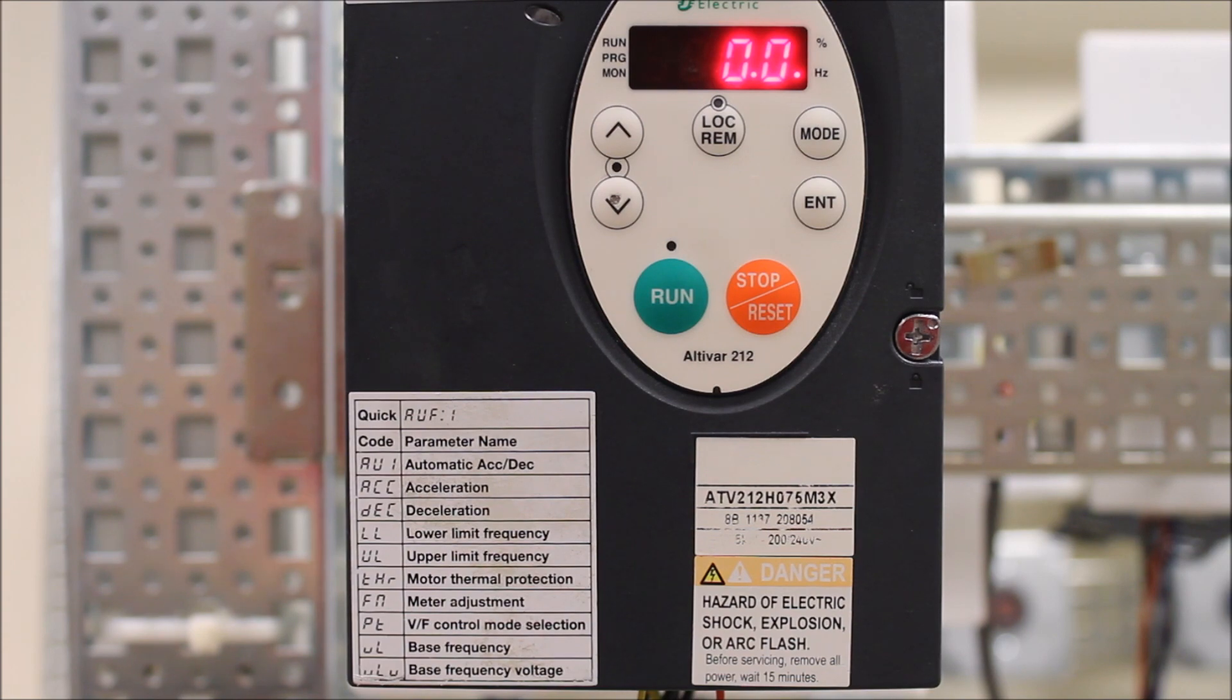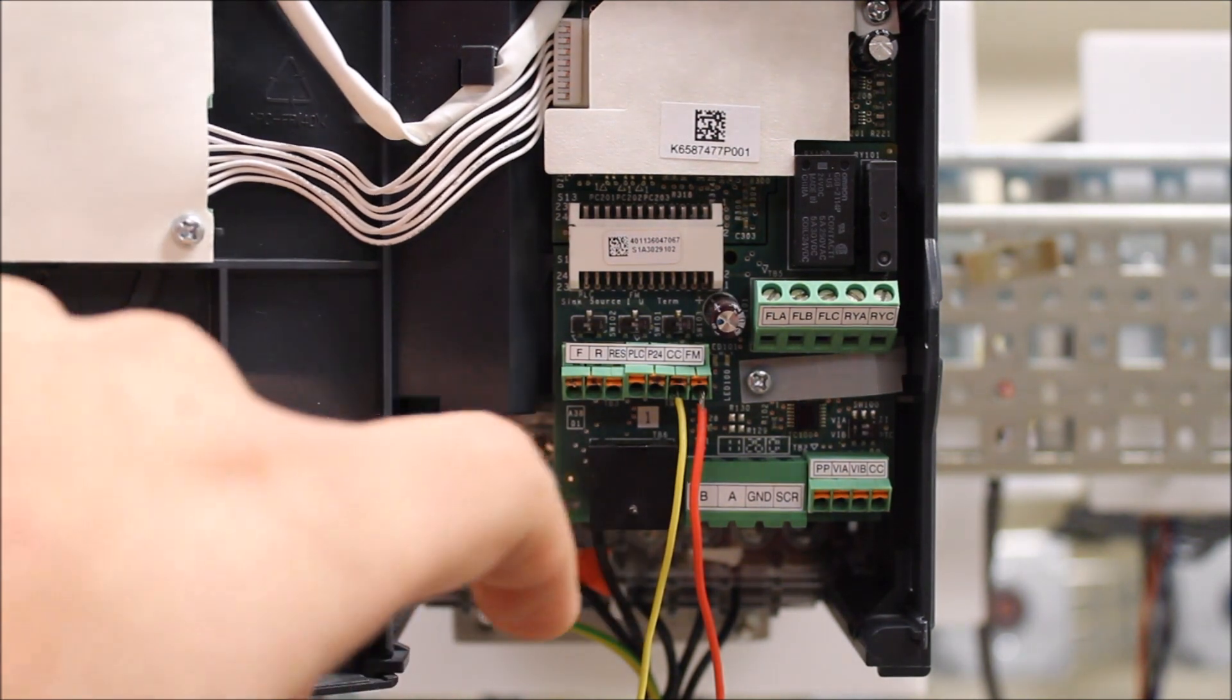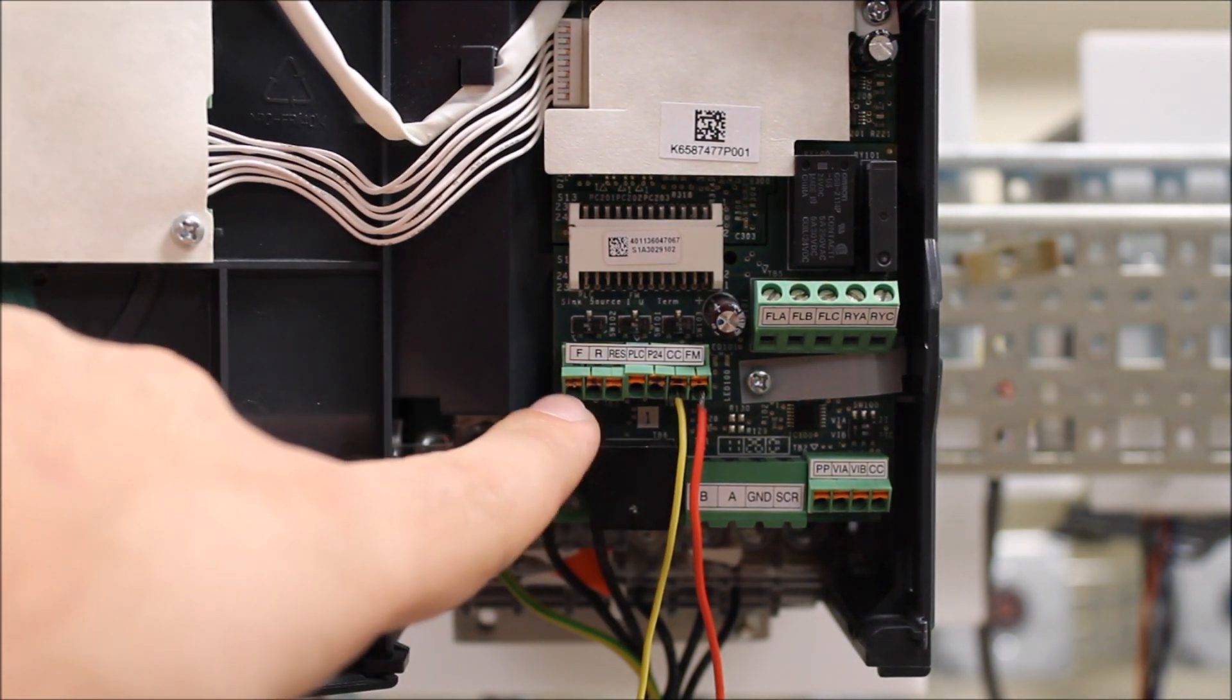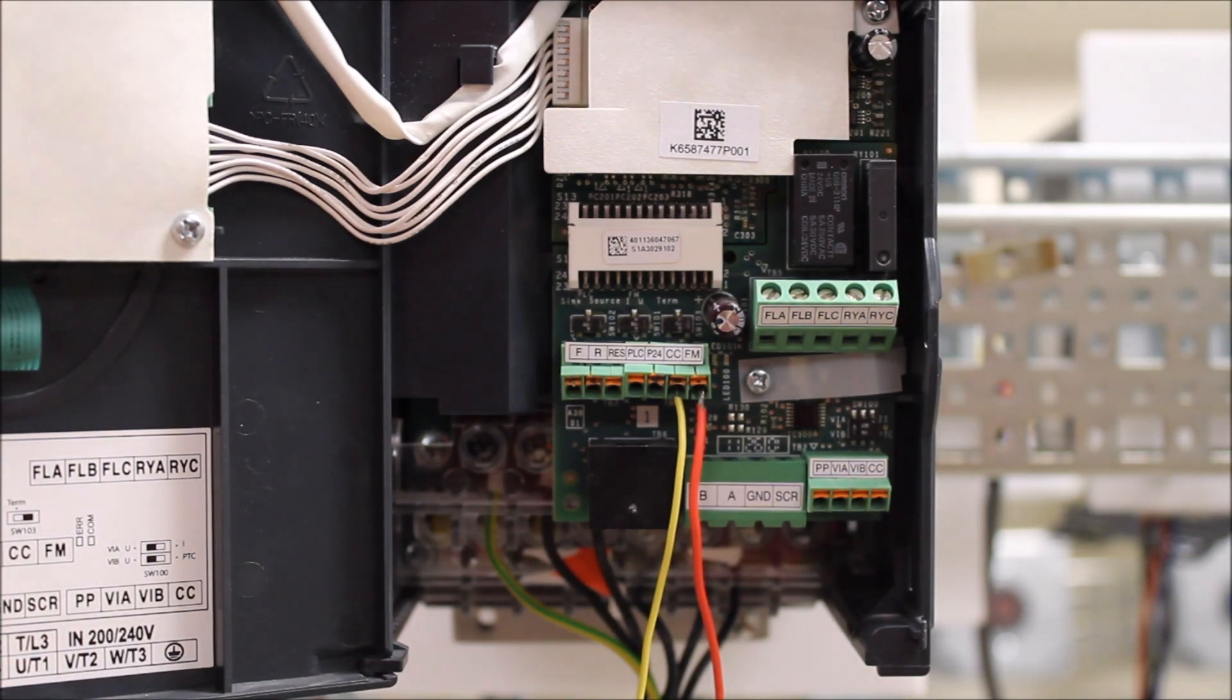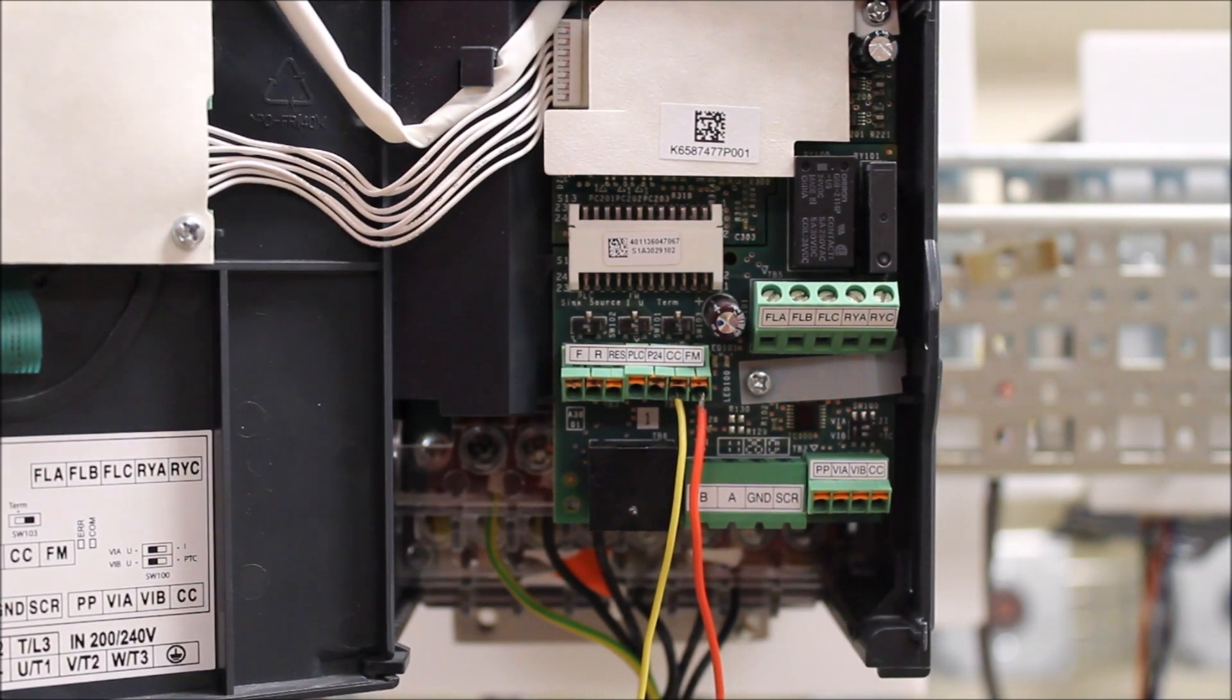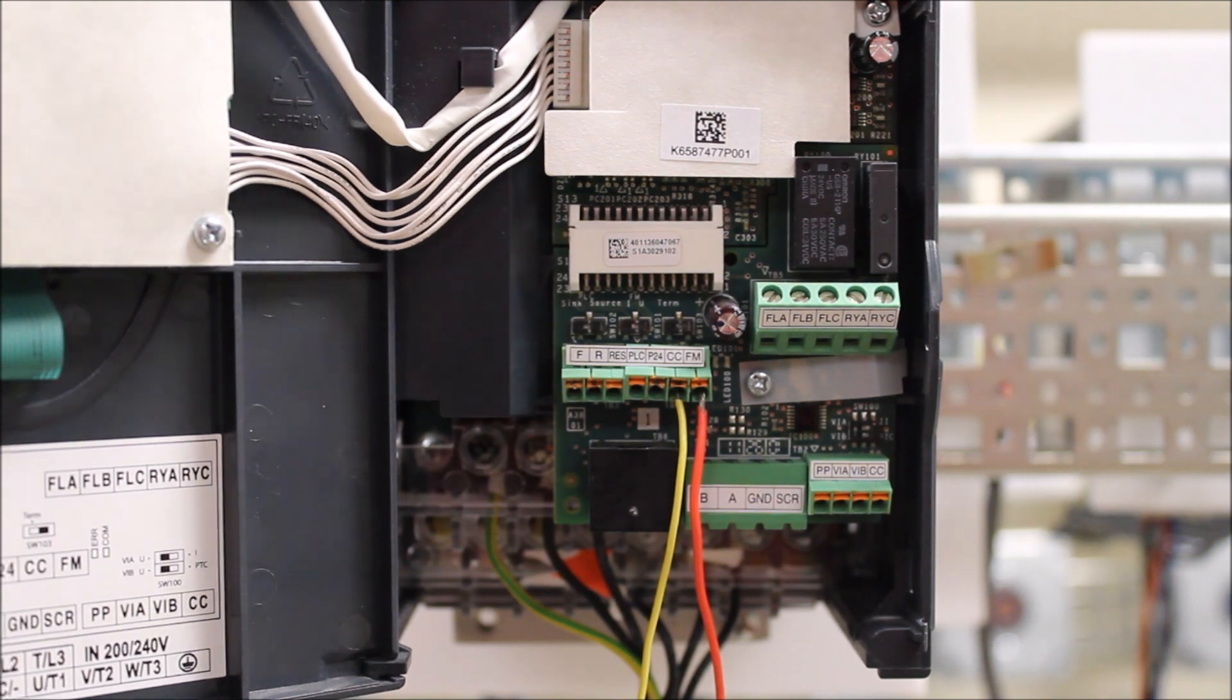So first things first to program this, just so you know, you have three logic inputs on this particular 212 drive. You have the F, the R, and the RES. F is normally your run forward, but the R and the RES can be programmed to whatever you would like in the parameters.